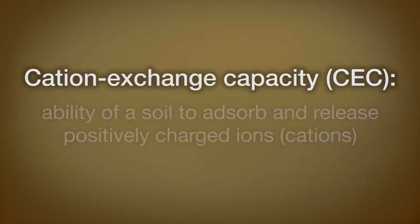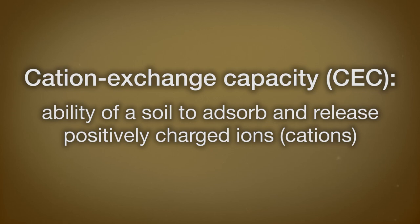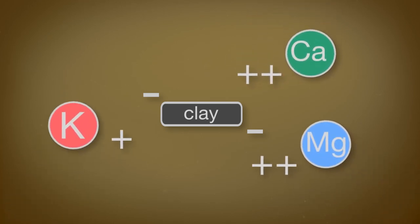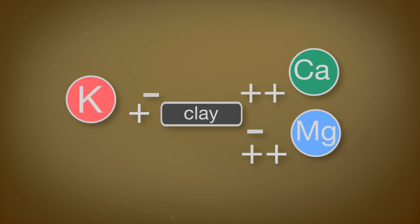Cation exchange capacity (CEC) is the ability of a particular soil to adsorb and release cations — positively charged ions. Clays have negatively charged outer surfaces, and the positively charged cations are attracted to these surfaces. The CEC of a soil is largely dependent on the amount and types of clay particles present. Soils with higher CECs may have more cations present, meaning they are better able to retain nutrients and release them to plants.